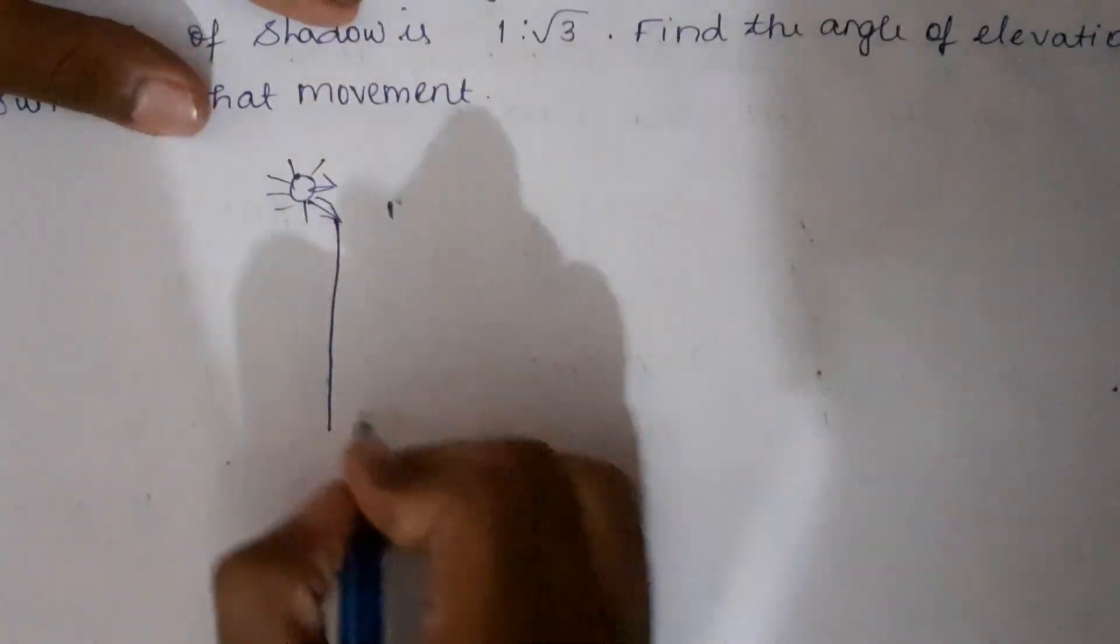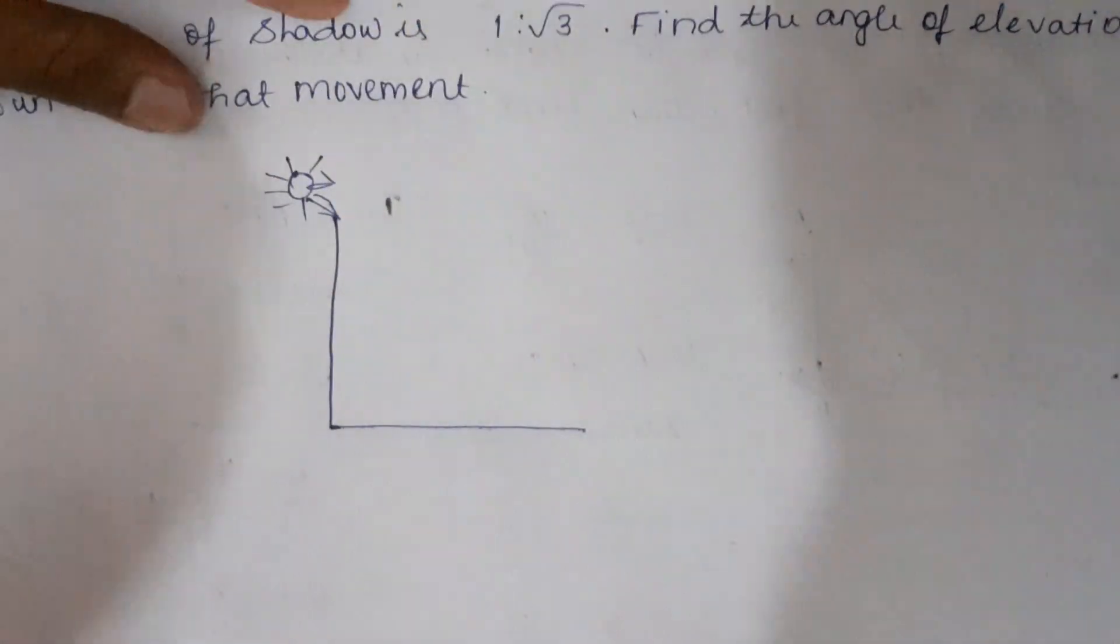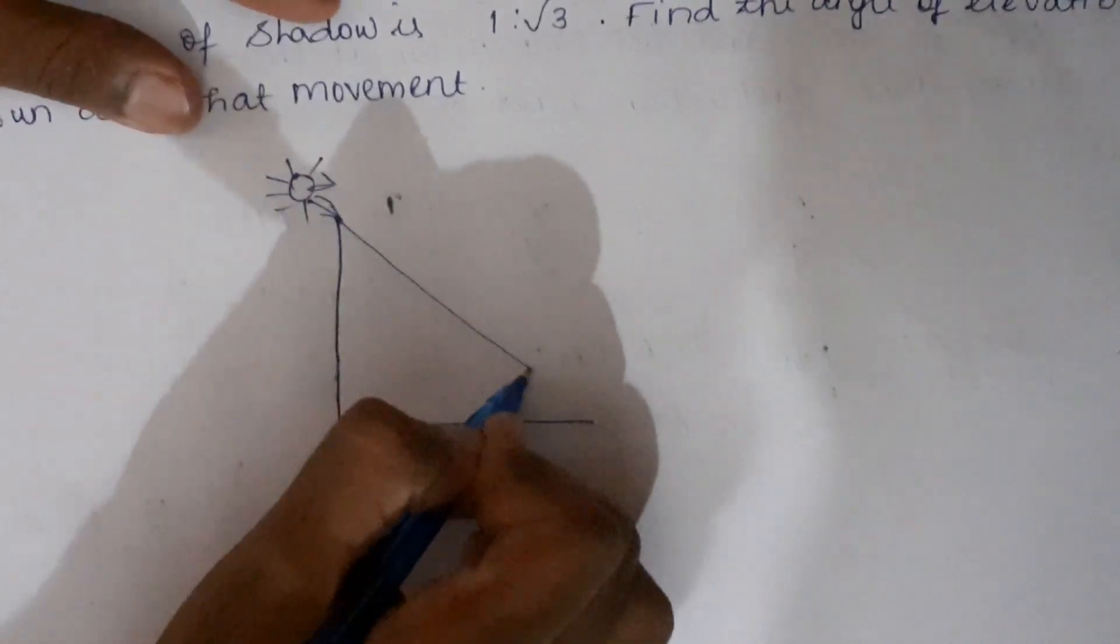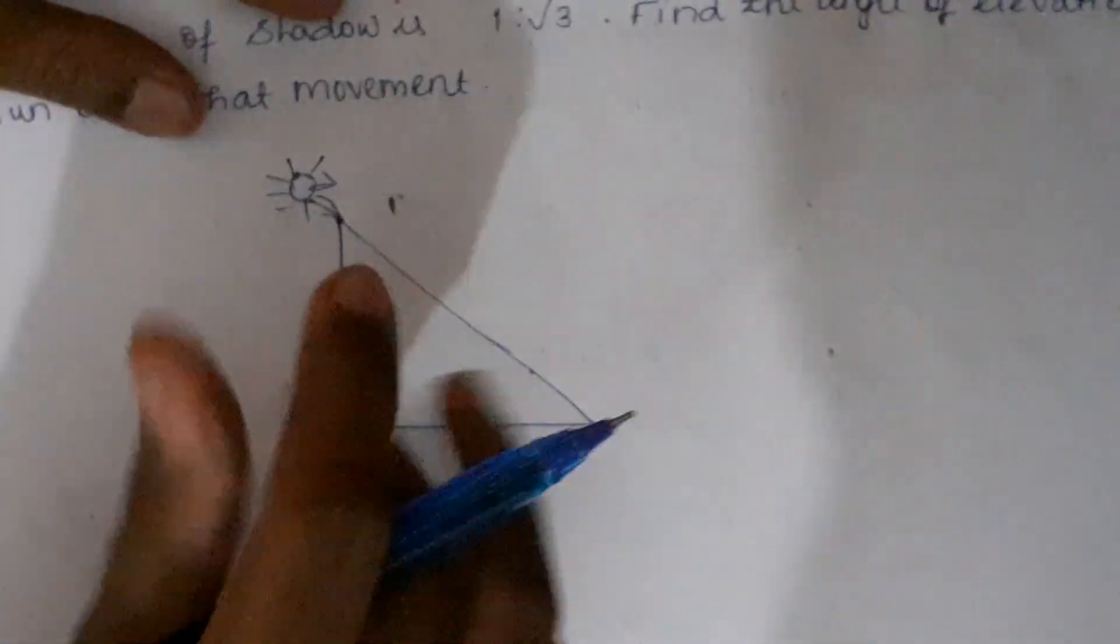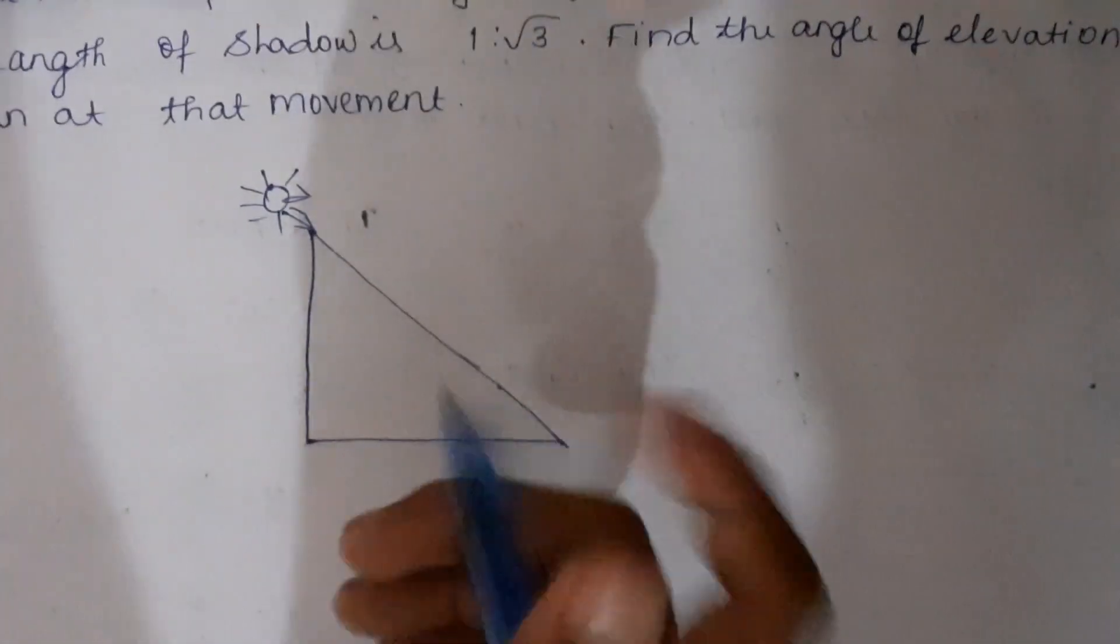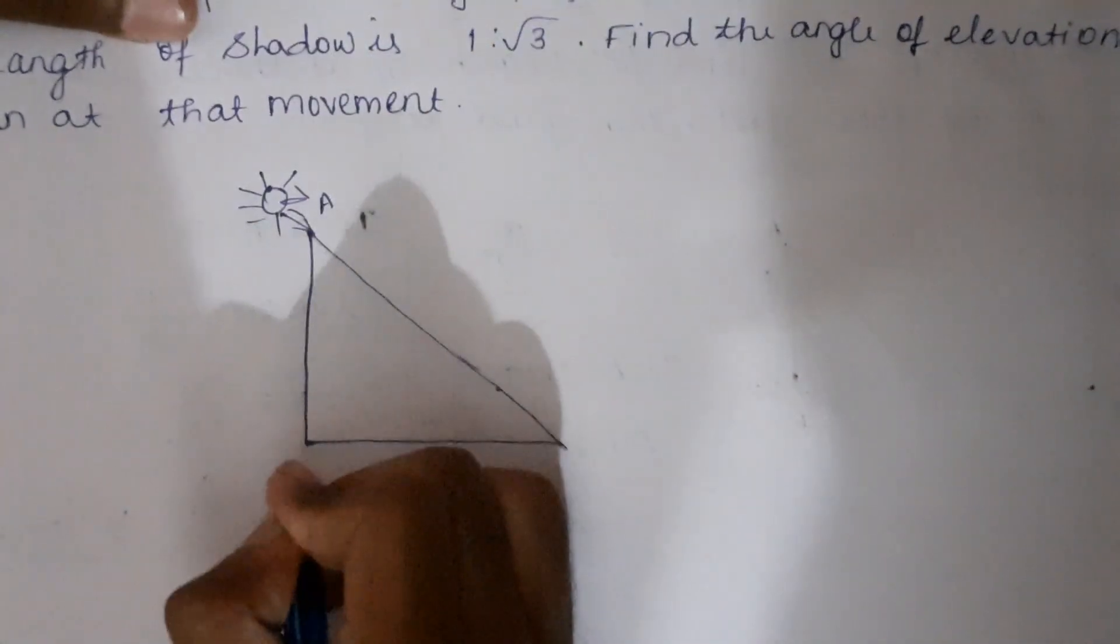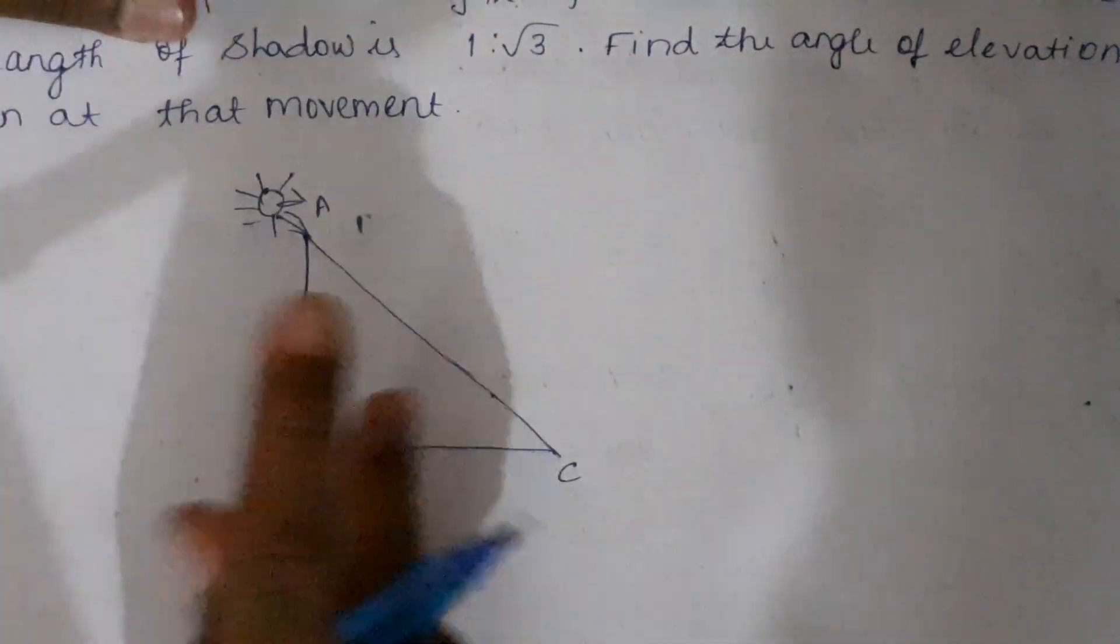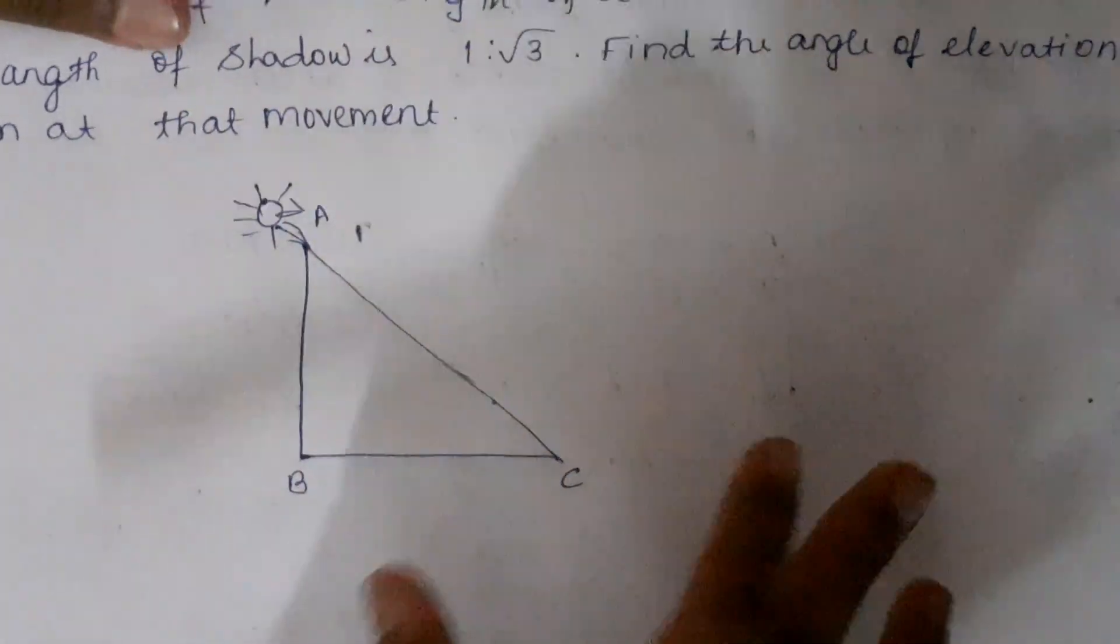If the sun's rays are coming in this direction, what would be the shadow? The shadow will be found here, right? This would be the shadow and this is the hypotenuse for this formed triangle. Now we will take the pole as AB and the shadow as BC. AB is the pole and BC is the shadow.